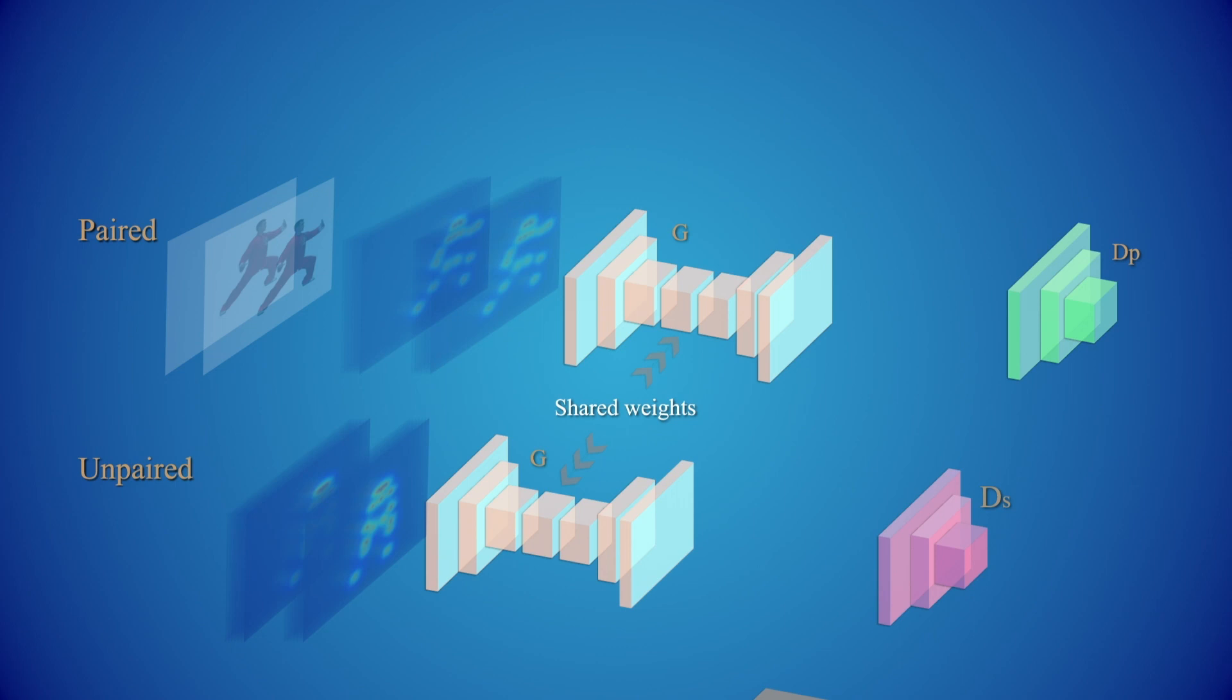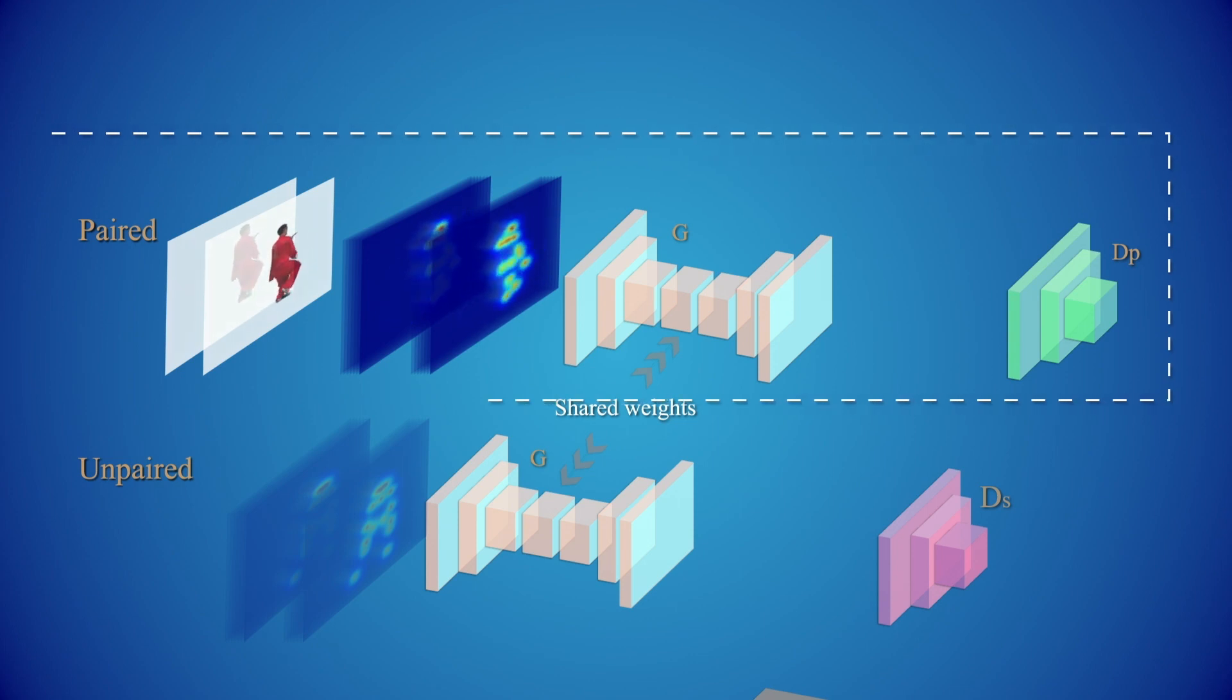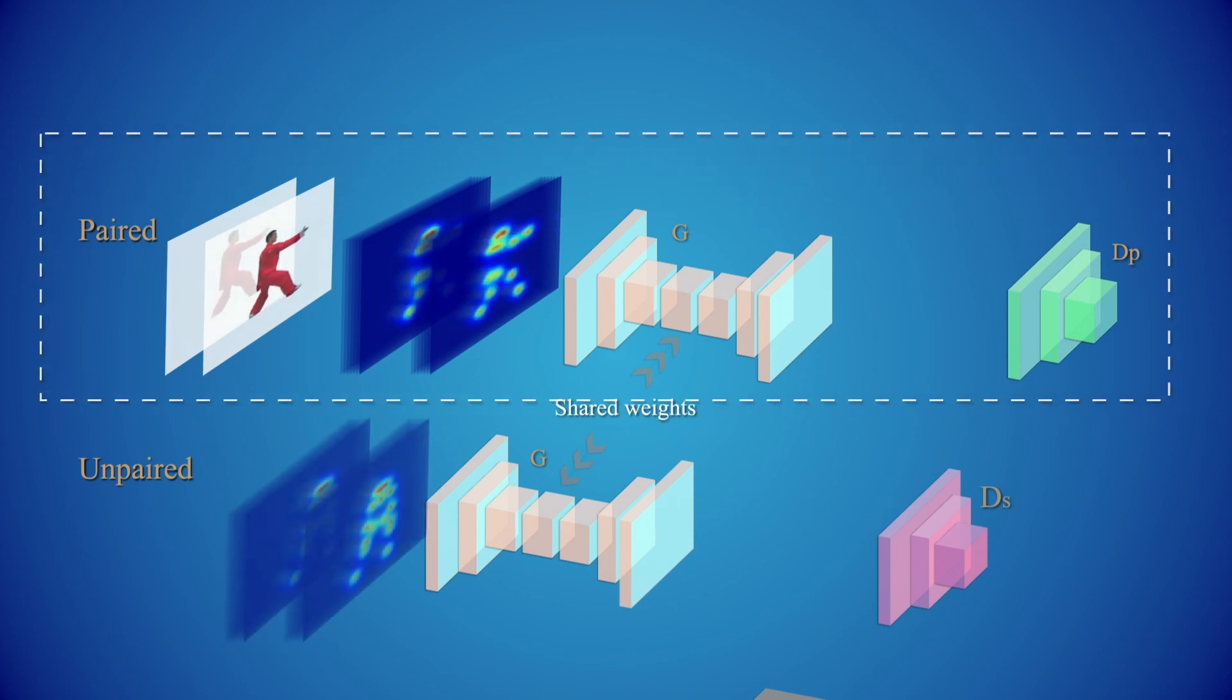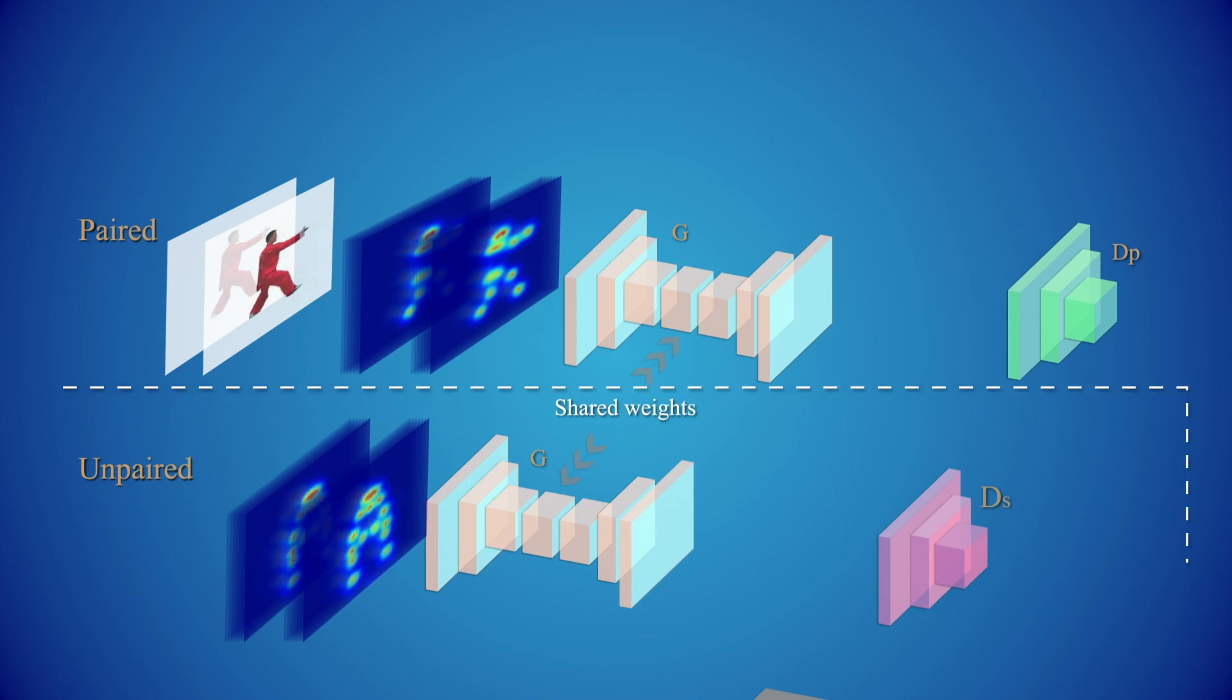Our network consists of two branches, both of which train the same generator. The paired branch is trained to translate the target actor's poses back to the reference video frames, while the unpaired branch trains the generator to translate unseen poses and motions into temporally coherent video sequences.